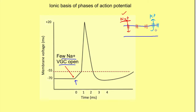The cells also have leaky potassium channels through which potassium is always leaking out of the cell, because potassium is more concentrated inside the cell. So the change in potential towards the positive side due to entry of these sodium ions is counterbalanced by the exit of these potassium ions. That is why the change in potential is not that rapid — there is a slow change in potential towards the threshold.